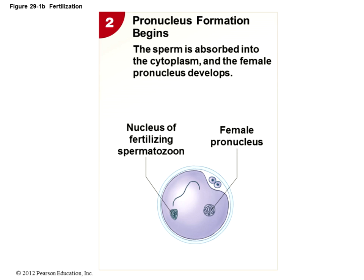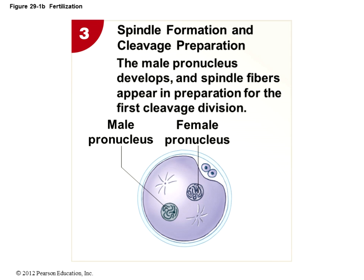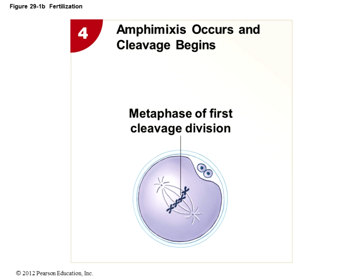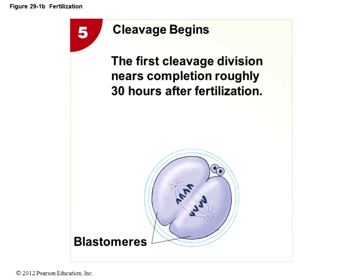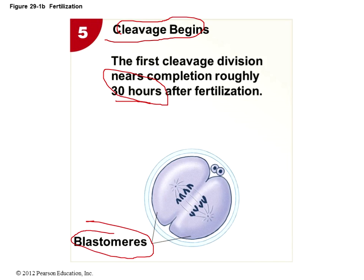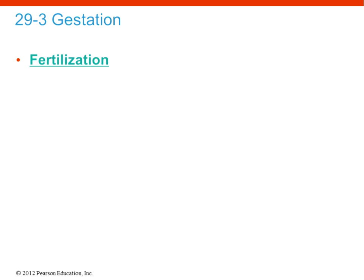Once the sperm penetrates and moves in, you have these two sets of nuclear material — male and female pronucleus — and they're going to be drawn to one another. Spindle formation and cleavage preparation begin, and these two components essentially form and come together. Ultimately we see amplomixis where the fusion of these two genetic components occurs. Then you have cell division or cleavage — the first cleavage division is completed about 30 hours after fertilization. We call those daughter cells blastomeres, and that process will continue.